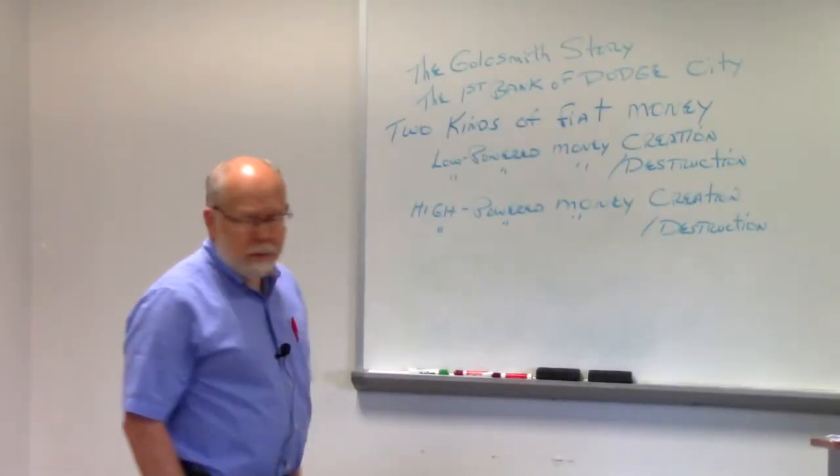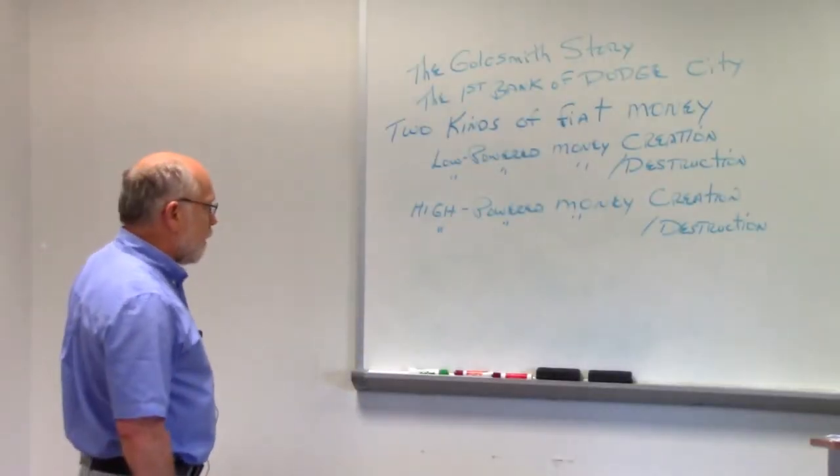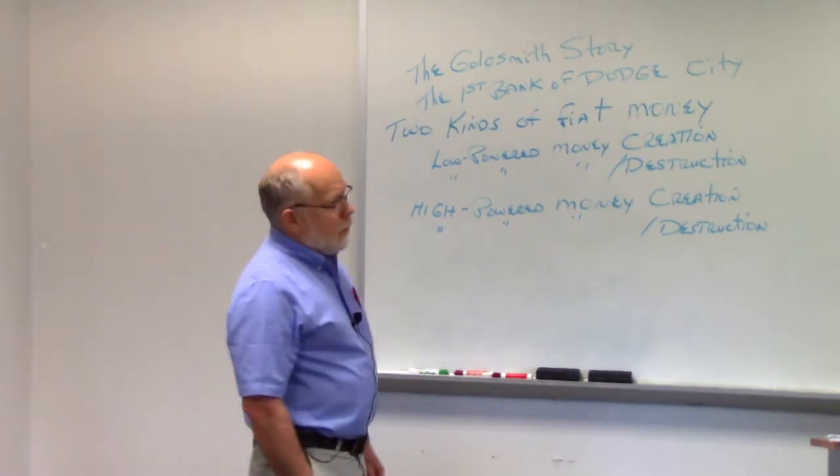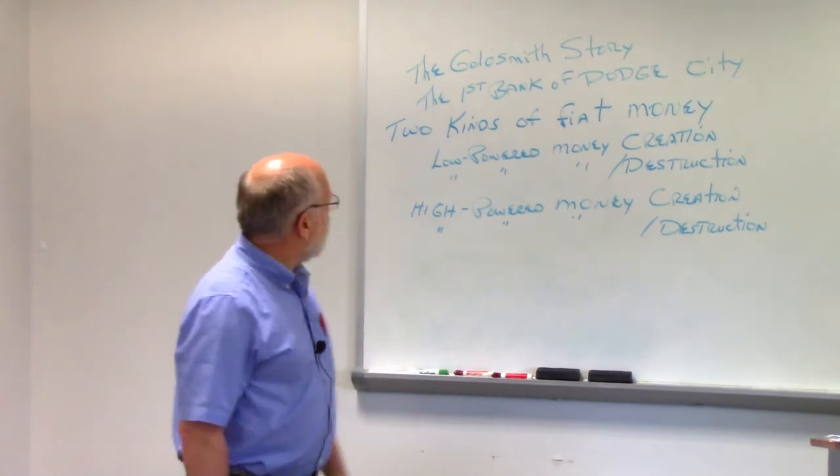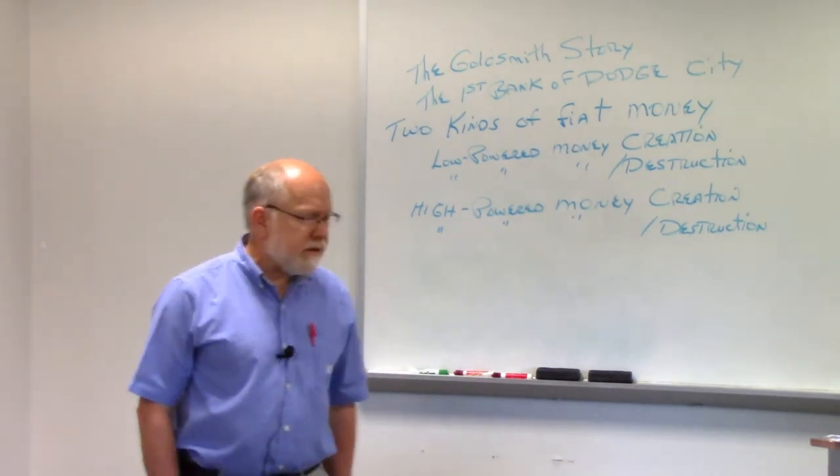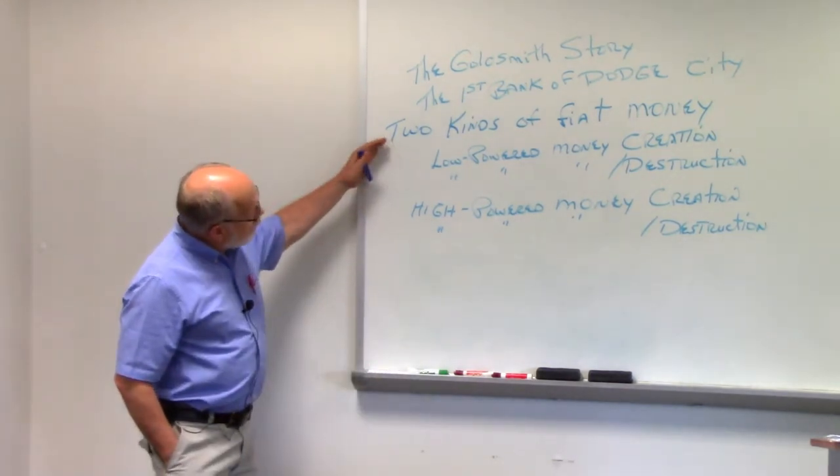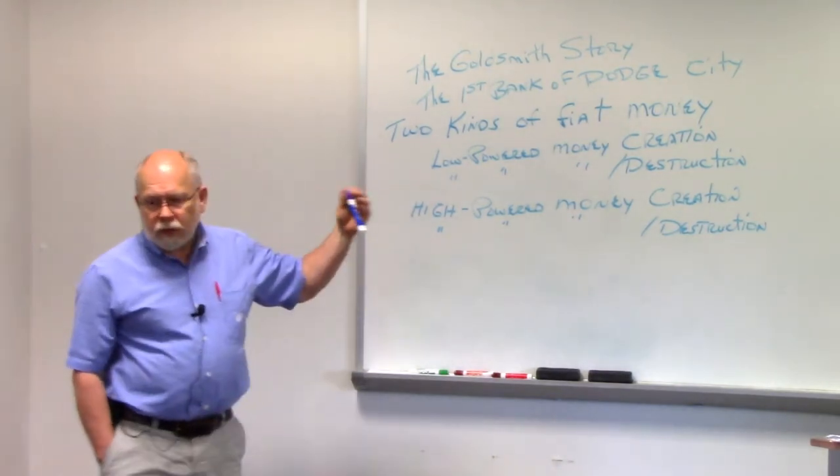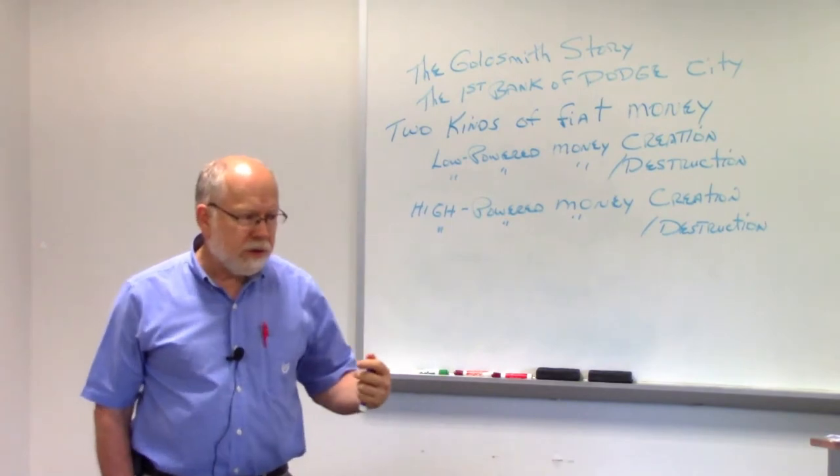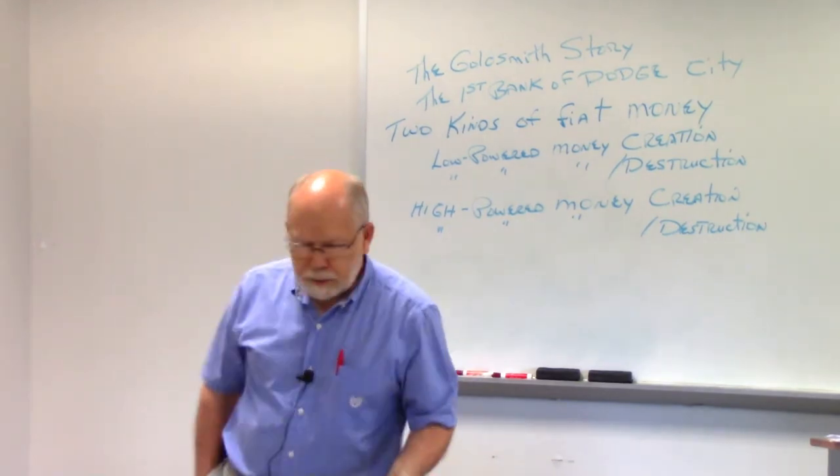All right, we're ready to begin our next session here talking about fiat money. We worked our way through commodity money, representative money, we're down to fiat money. Now we're going to talk about the two different kinds of fiat money: low-powered fiat money and high-powered fiat money. Those are my terms. It is in the literature somewhere, but it's not in your particular textbook.